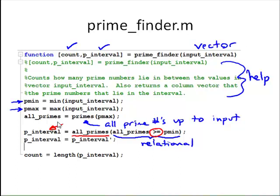And then, primes returns a row vector, so we have one last little thing to do here. We need to convert. So, p_interval will also be a row vector, and we want a column vector. So, we use the apostrophe to transpose and create a column vector. There's our output p_interval.